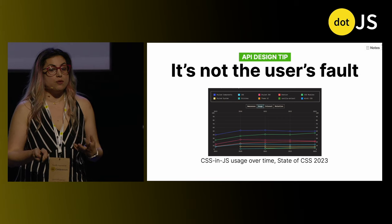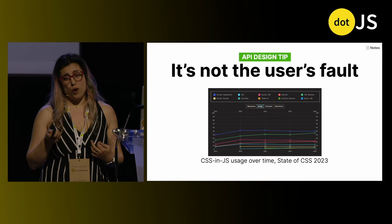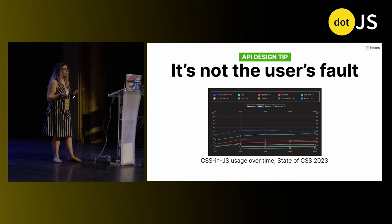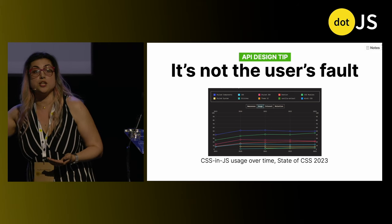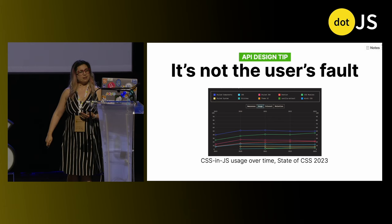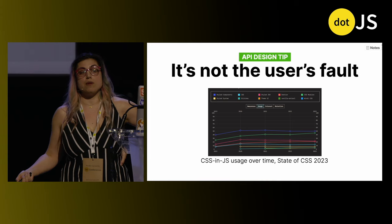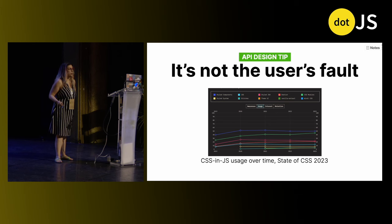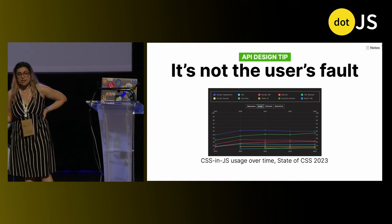Another misconception I hear from engineers: "the users are doing it wrong — why can't they educate themselves?" If one user does something wrong, maybe it's their fault. If multiple users get it wrong, it's your API's fault. Instead of blaming them, explore how to make things better. Take CSS-in-JS — so many people think developers using it are just doing it wrong and should simply learn to use CSS properly. But if so many people can't use CSS properly, CSS has a problem. We need to see what the pain points are and fix CSS if we want to stop people from using CSS-in-JS. I feel the same way about Tailwind — I don't like it, but we need to see why people use it and fix it in CSS.